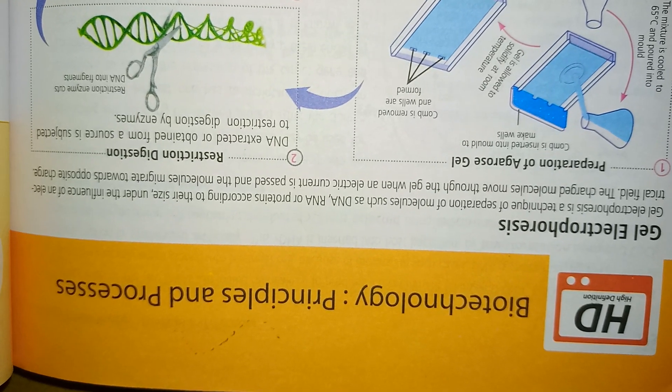Gel electrophoresis is a technique for separation of molecules such as DNA, RNA, or protein according to their size under the influence of electric field. The charged molecules move through the gel when electric current passes, and molecules migrate toward the appointed charge.